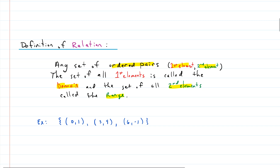For example, we could have a set — delineated by curly brackets — of three different ordered pairs: (0, 1), (3, 4), and (6, -2). They don't have to be related in any fashion. There's no rule saying what can or can't go in the first and second elements — just two pieces of information stuck together in a group. That's a relation.